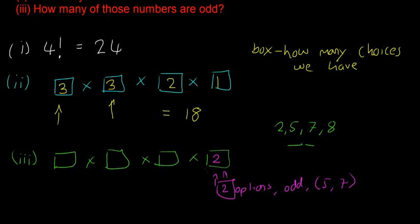After filling the last box, we go from left to right for the rest. There's no more restrictions, so how many options for the first box? Since one digit is already committed to the last position, we have 3 options left. Then 2 options for the next box, and 1 for the remaining box. So the answer is 3 × 2 × 1 × 2, which gives us 12 — so 12 of those numbers are odd.